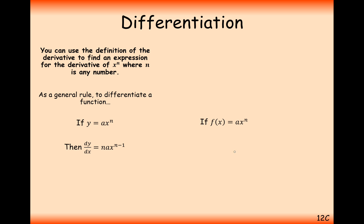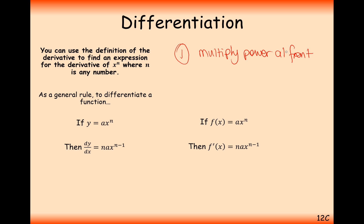Exactly the same thing here, just with slightly different notation using f(x). So if f(x) equals ax to the power of n, then f'(x) — which represents the differential — equals n times a, x to the power of n minus 1. Your two-step process: multiply the power to the front, then subtract 1 from the power.